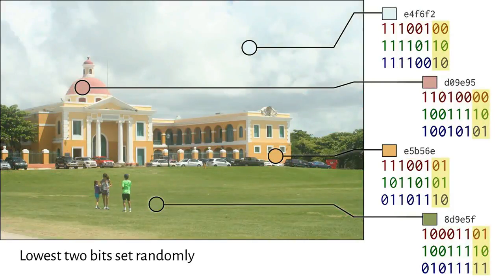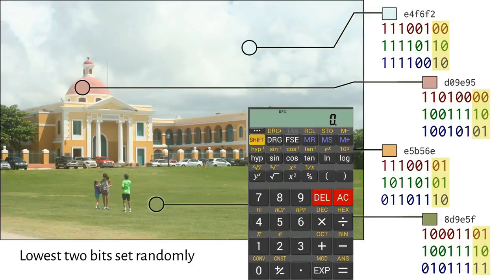Instead of making them all zeros, all ones, or random, we'll use them to conceal a message. Within the 1.2 million pixels in this image, we could squeeze over seven million bits. That's enough to store hundreds of pages of text.